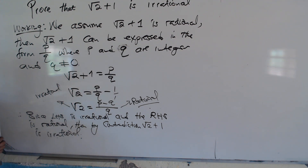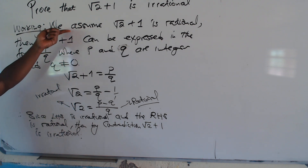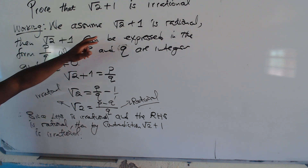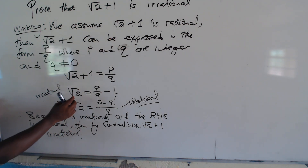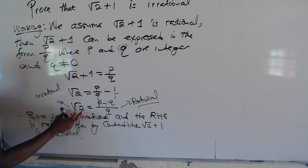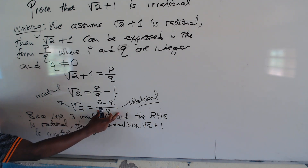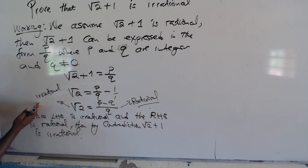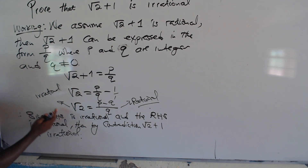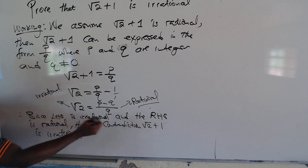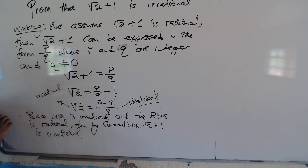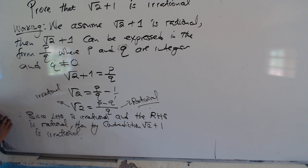Why are we saying by contradiction? Because we started with an assumption that square root of 2 plus 1 was rational. If it were rational, the right-hand side was supposed to be rational and match. But we find the left-hand side is irrational and the right-hand side is rational, and it is not true that a number can be rational and at the same time irrational. So the assumption is false.